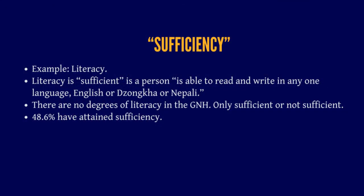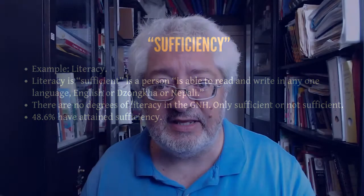You can see an example here about literacy. Literacy is sufficient if a person is able to read and write in any one language of the three languages in the country, which is English and then two local languages. So if a person can read and write in any one of these languages, literacy is sufficient. There are no degrees of literacy in the GNH — only sufficient or not sufficient. A country in which most people can barely read or write is very different from one where most people have a university degree or a doctorate.